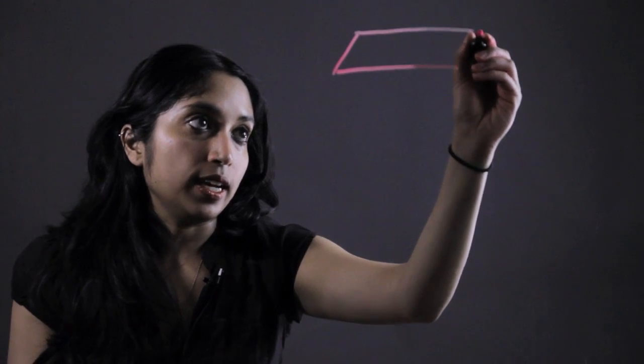So a polyhedron is just a three-dimensional geometric object that is made out of flat surfaces and lines.